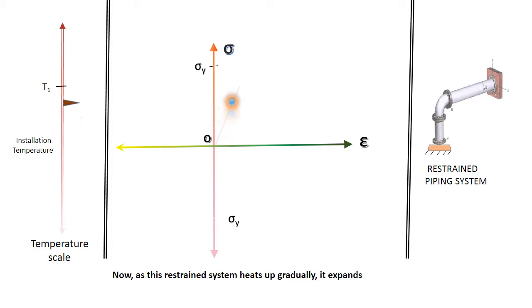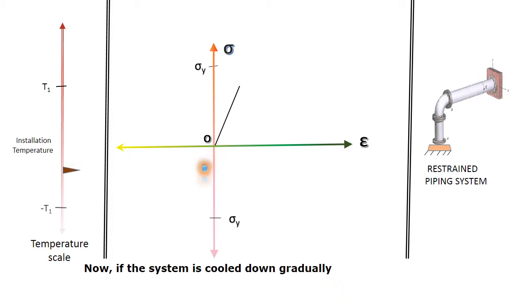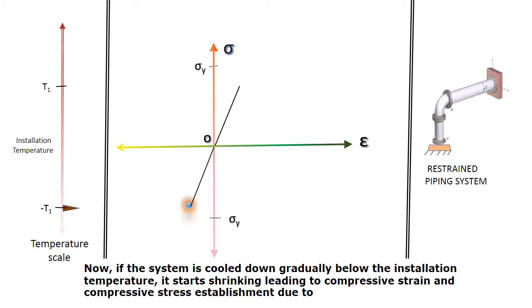Now, as the restrained system heats gradually, it expands leading to development in thermal strain and accordingly, thermal stress sets in. Now, if the system is cooled down gradually below the insulation temperature, it starts shrinking leading to compressive strain and compressive stress establishment due to lowering of the temperature.